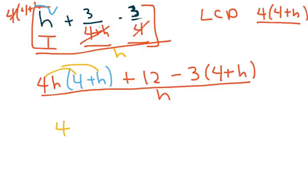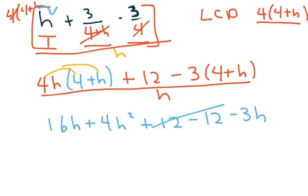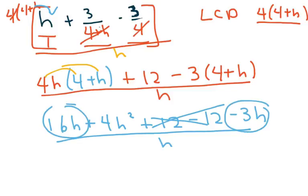We get 16 h plus 4 h squared plus 12 minus 12 minus 3 h. So the 12s cancel, and this is all over h. Now I'm going to factor out an h. Oh, I can combine these two. So what I have is 16 minus 3 is 13 h plus 4 h squared over h.